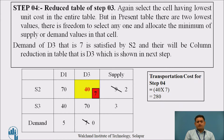The reduction table of step 3 shows destinations D1 and D3 remaining with sources S2 and S3. The lowest unit cost in the table is 40 and there are two cells with cost 40. You can select either one. Here, the cell at source S2 and destination D3 is selected. The demand of D3 is 7 and source S2 availability is 9, so D3 is fully satisfied and S2 has 2 units remaining. As D3 is satisfied, there is a column reduction of D3.